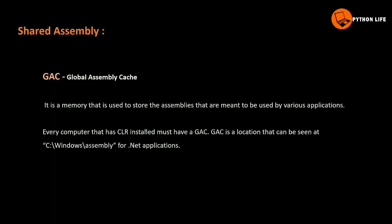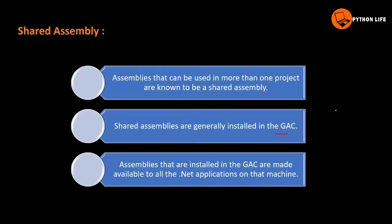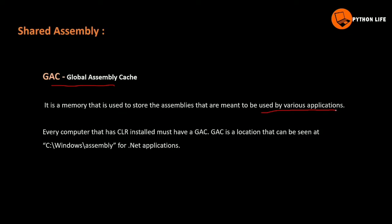Let's talk about GAC. GAC is Global Assembly Cache. Global Assembly Cache is a memory used to store assemblies that are meant to be used by various applications installed on the machine. Every computer has CLR installed, and within the CLR there is a GAC located at C drive, Windows, Assembly.